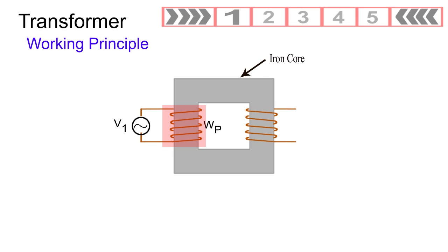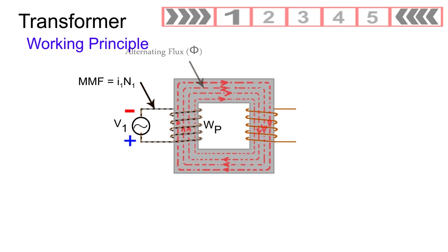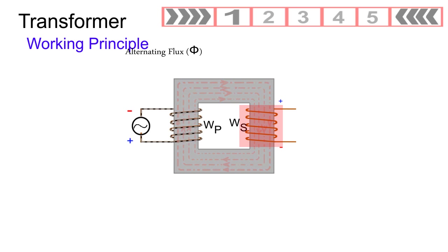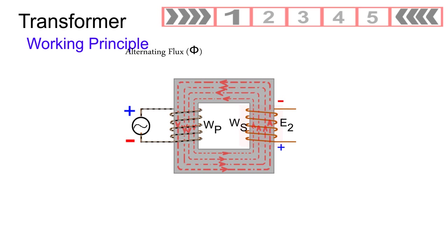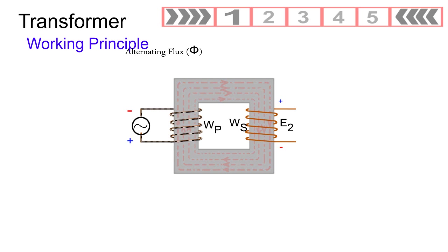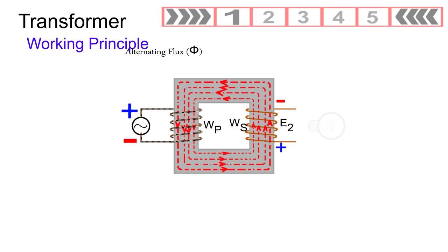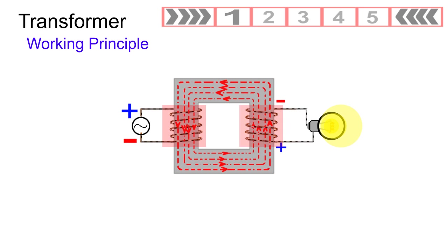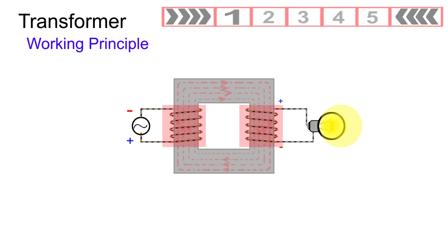As this winding links with an iron core, its MMF produces alternating flux in the core. This alternating flux links the turns of the secondary winding WS. As this is alternating, it induces in the winding WS an EMF of the same frequency as the flux. Because of this induced EMF, the secondary winding WS is capable of delivering current and energy. Therefore, the energy is transferred from WP the primary to WS the secondary by means of magnetic flux.